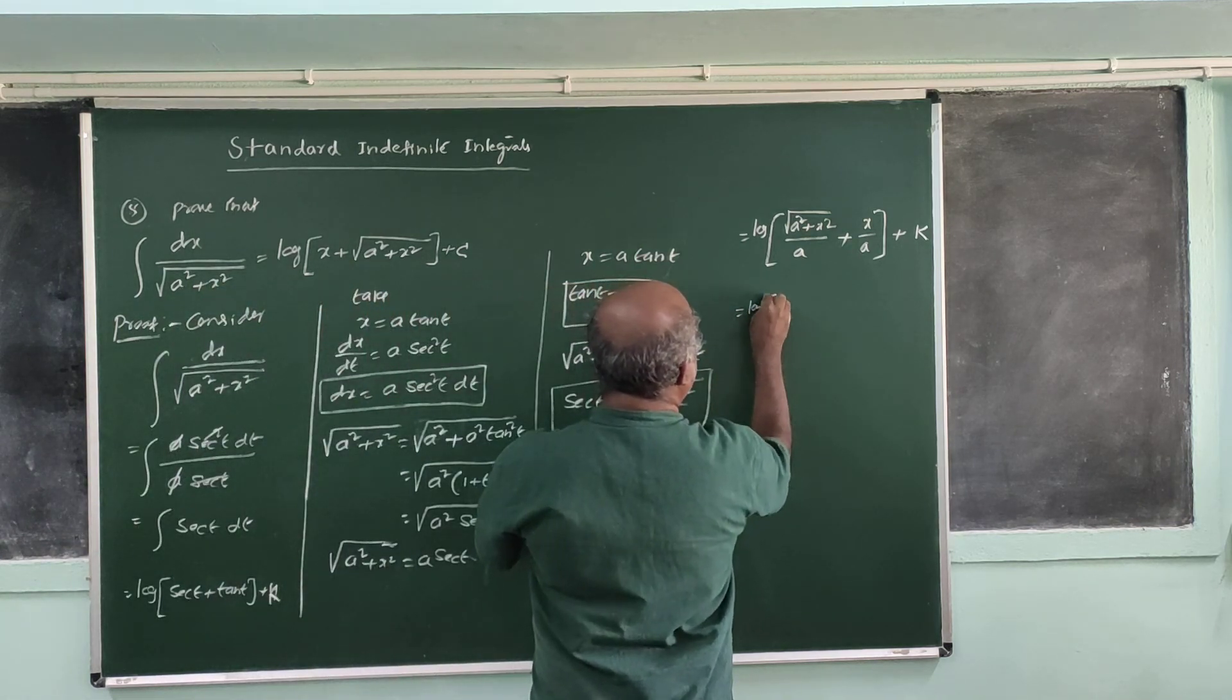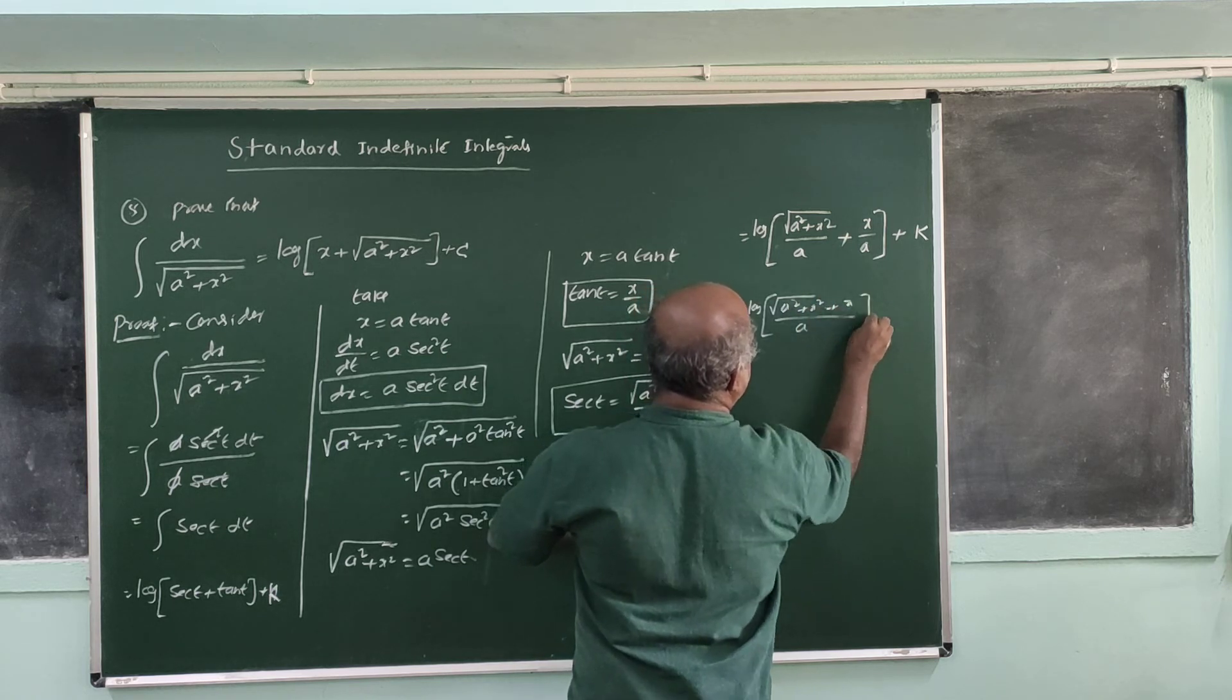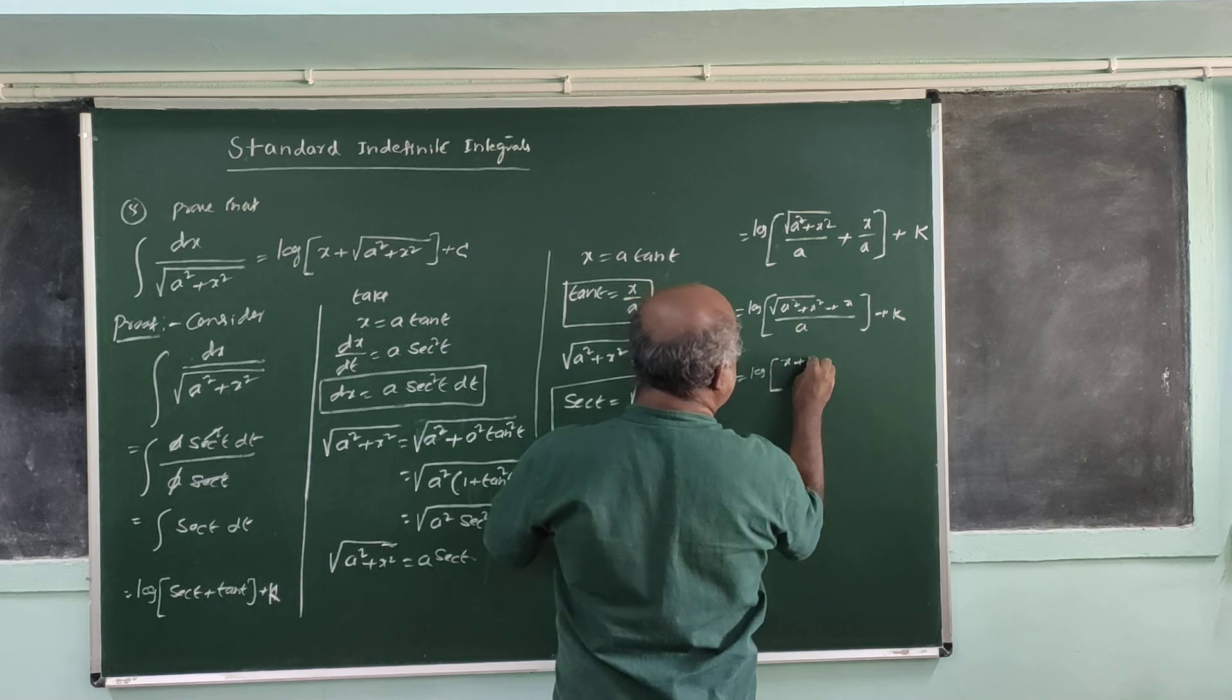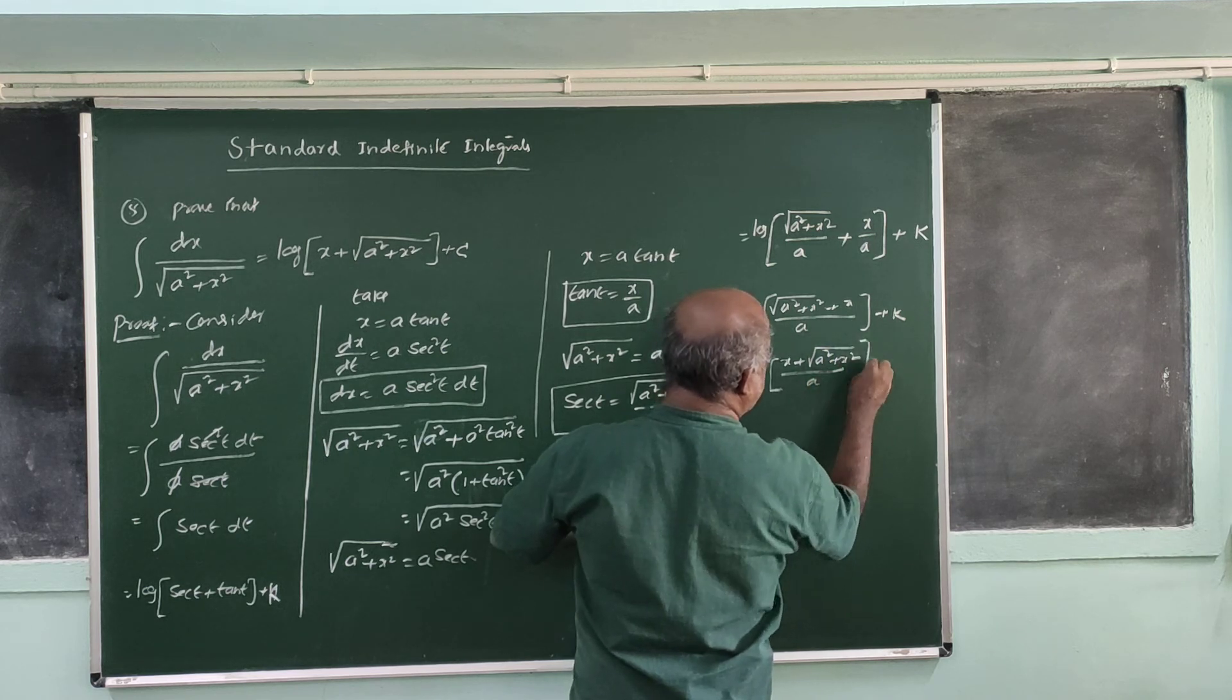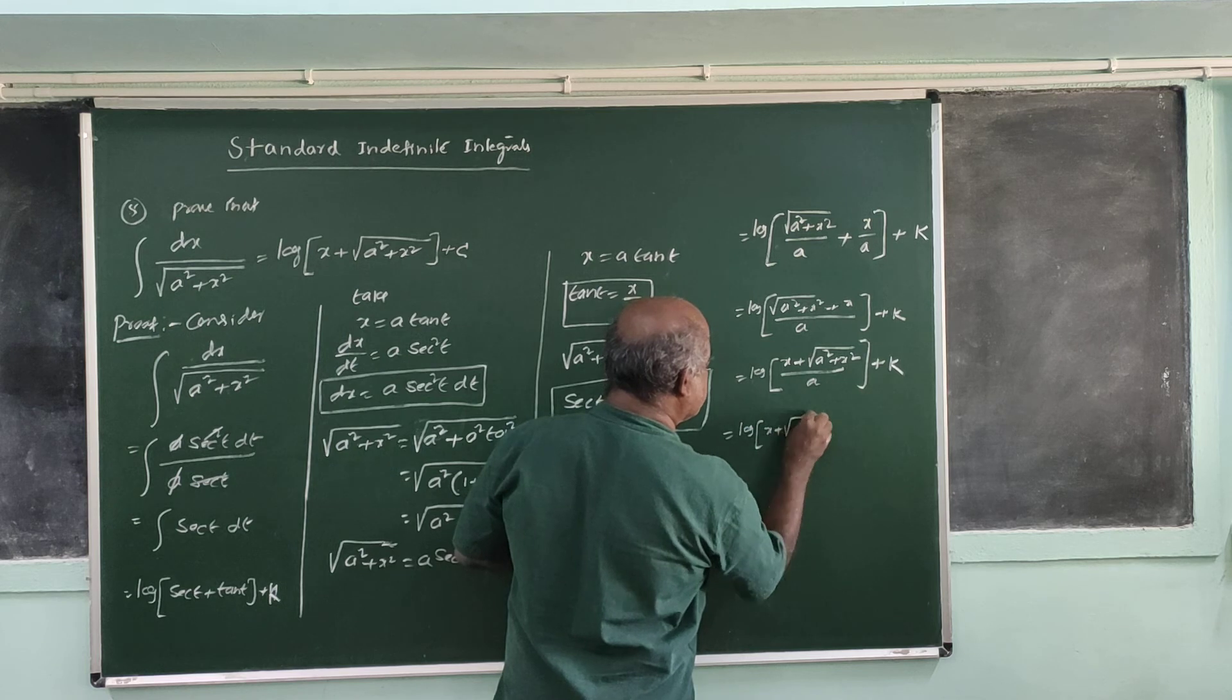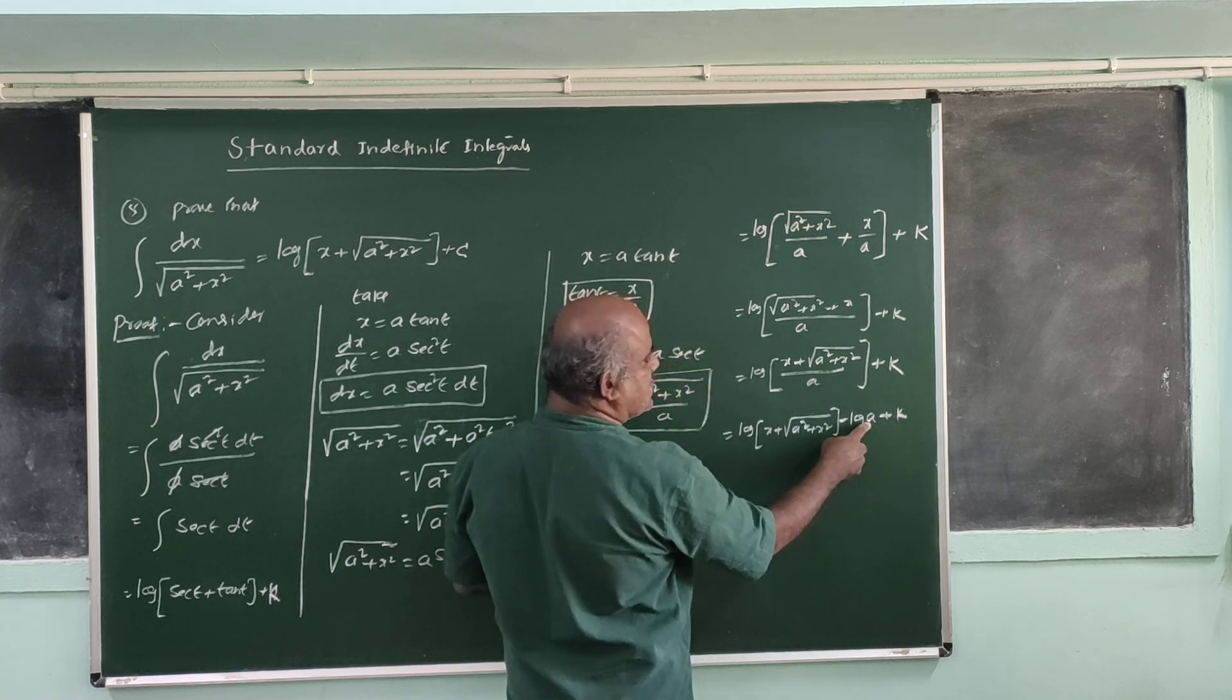This gives us log of root of a squared plus x squared plus x divided by a. Using log of A divided by B equals log A minus log B, we get log of root of a squared plus x squared plus x minus log a plus K.